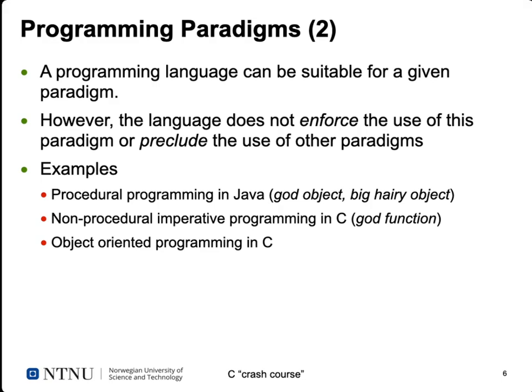The programming language is not really married to a given paradigm — a language can be suitable for different paradigms and doesn't enforce or preclude any particular one. You could do procedural programming in Java with one large 'God object.' You could do non-procedural imperative programming in C with just one big main function. There are also approaches to object-oriented programming in C without going to C++, such as the GTK libraries on Linux, which are built in a C dialect using some object orientation bolted onto C code.